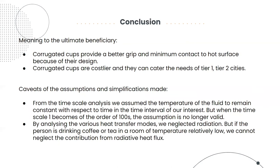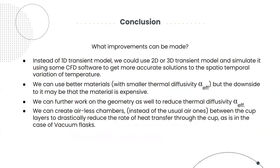Looking at the assumptions and simplifications we made, we can see that from the time scale analysis, we assumed that the temperature of the fluid is constant for our time interval of interest. But when the timescale one becomes of the order of 100 seconds, this assumption would no longer be valid. By analyzing the various heat transfer modes, we neglected radiation. But if the person is drinking coffee or tea in a room which has a temperature which is relatively low, we cannot neglect the contribution from the radiative heat flux. Some of the improvements that can be made are as follows. Instead of a 1D transient model, we could use a 2D or a 3D transient model and simulate it using some CFD software. This would give more accurate solutions. We can also use some better materials, but then the downside would be that the material is expensive. We can further work on the geometry and by working on the geometry reduce the thermal diffusivity alpha effective.